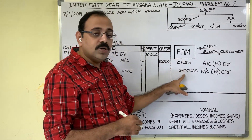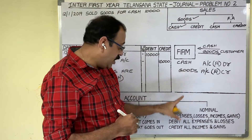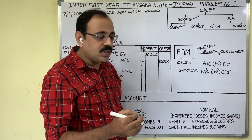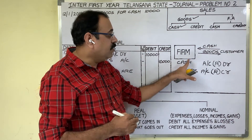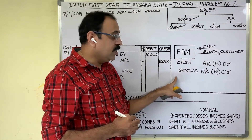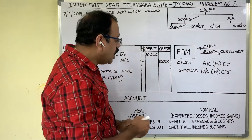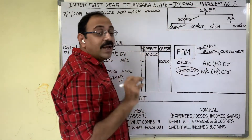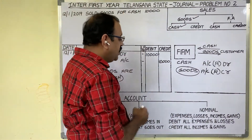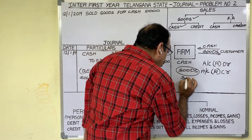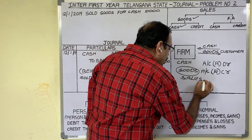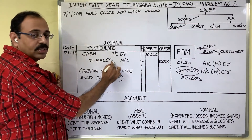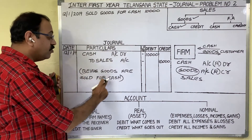Cash and goods — both are assets, both come under real accounts. Real account rule: debit what comes in, credit what goes out. Cash is coming — debit cash account. Goods are going — credit goods account. When goods word comes in credit, instead of writing that word we should write the transaction name — this is a sales transaction, write 'sales account'. The final entry is: cash account Dr to sales account. Narration: being goods are sold for cash.